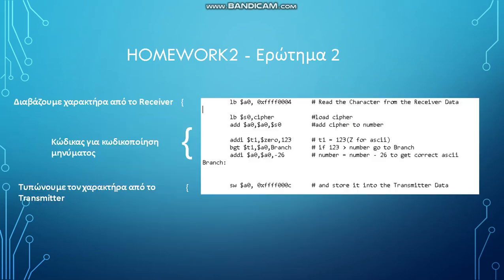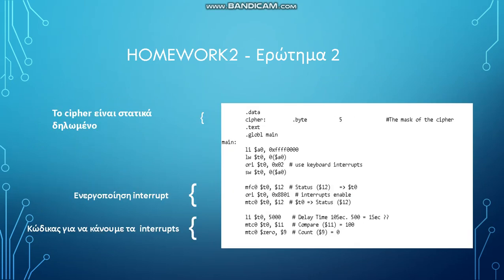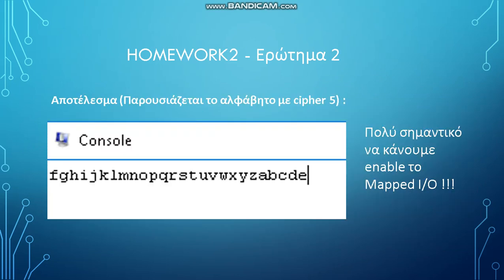In the second part of the assignment, we were asked to encode the user input by reading from the receiver data and printing from the transmitter data. The input was encoded using Caesar's cipher, which in our case was 5. For example, if the user typed the character B, then the program should print the character G. This is the result, which shows the encoded alphabet.